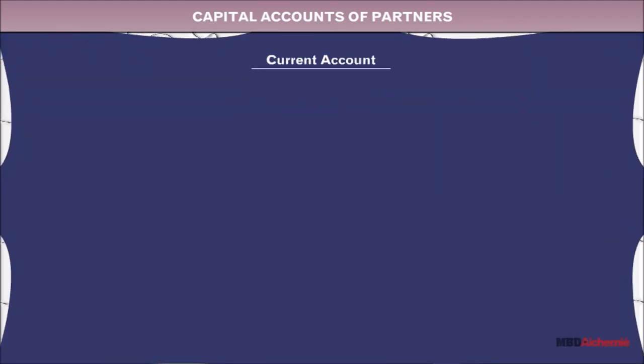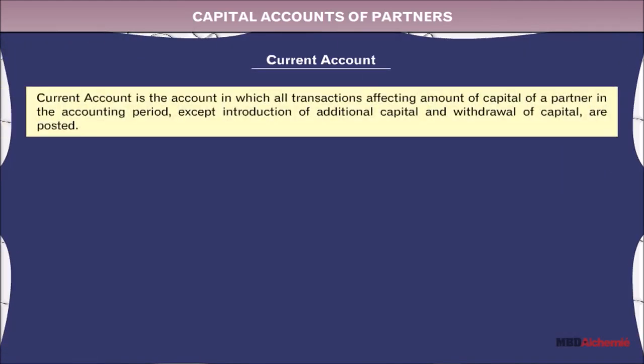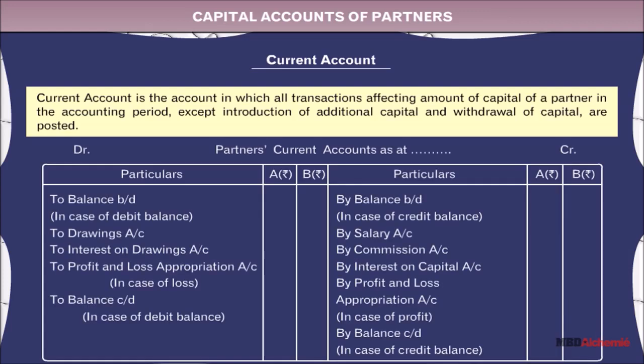Current account is the account in which all transactions affecting the amount of capital of a partner in the accounting period — except introduction of additional capital and withdrawal of capital — are posted. The format of the partners' current account is as follows.